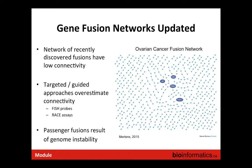TMPRSS2-ERG, found in prostate cancer, was actually first identified by expression arrays using outlier expression analysis, and then the sequence was validated. Nowadays, RNA sequencing would be used directly, because it provides both expression information and nucleotide-level sequence information.